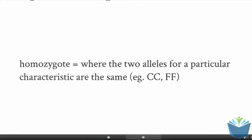A homozygote, that's where you have, for a particular characteristic, the two alleles which are the same. So for instance, big C, big C, that could also be small C, small C or big F, big F. Some examples of that.